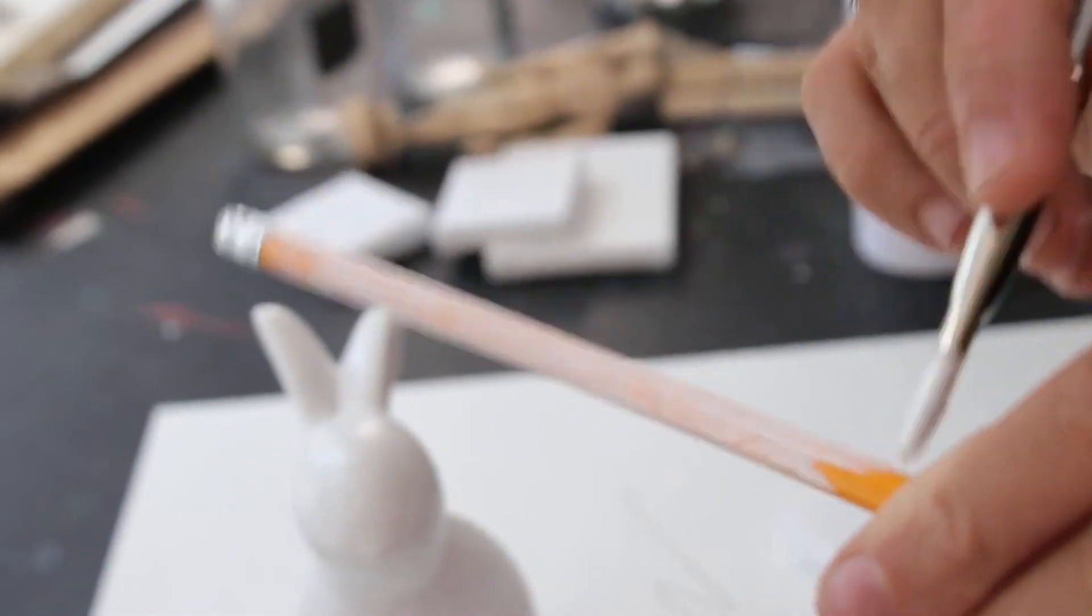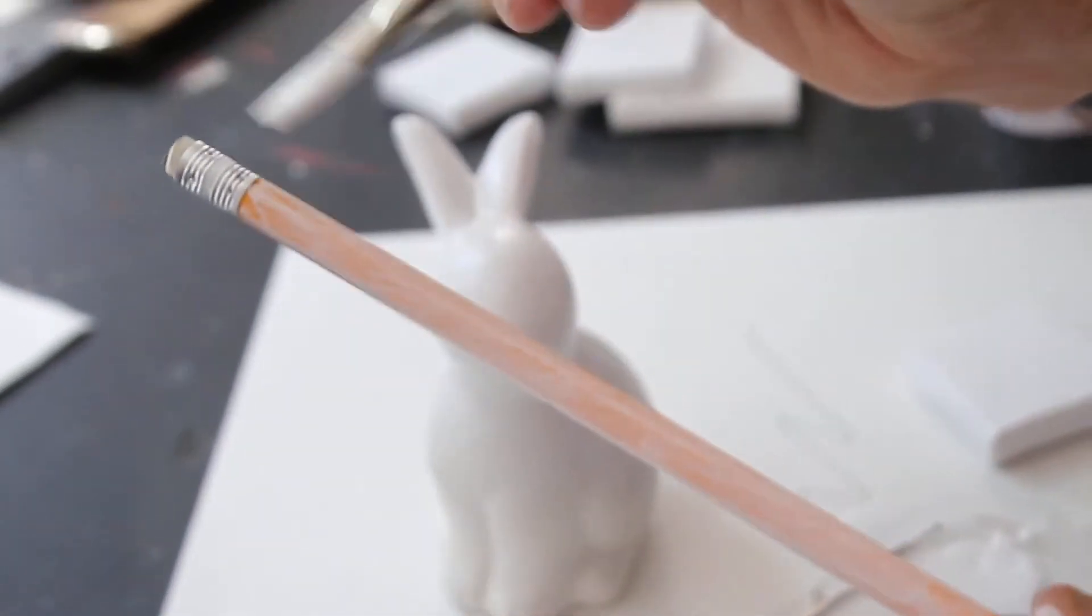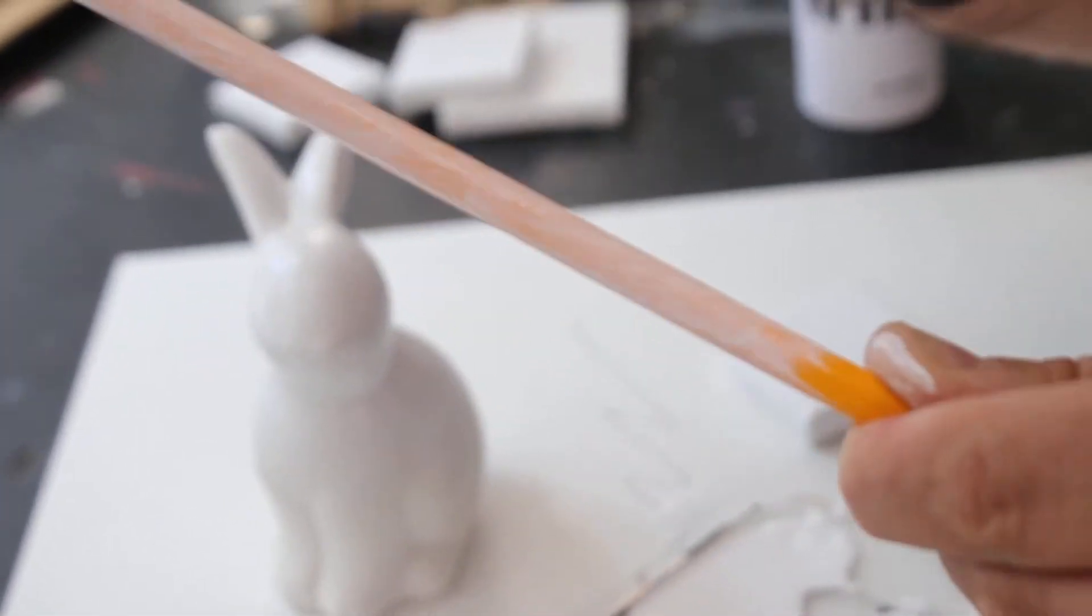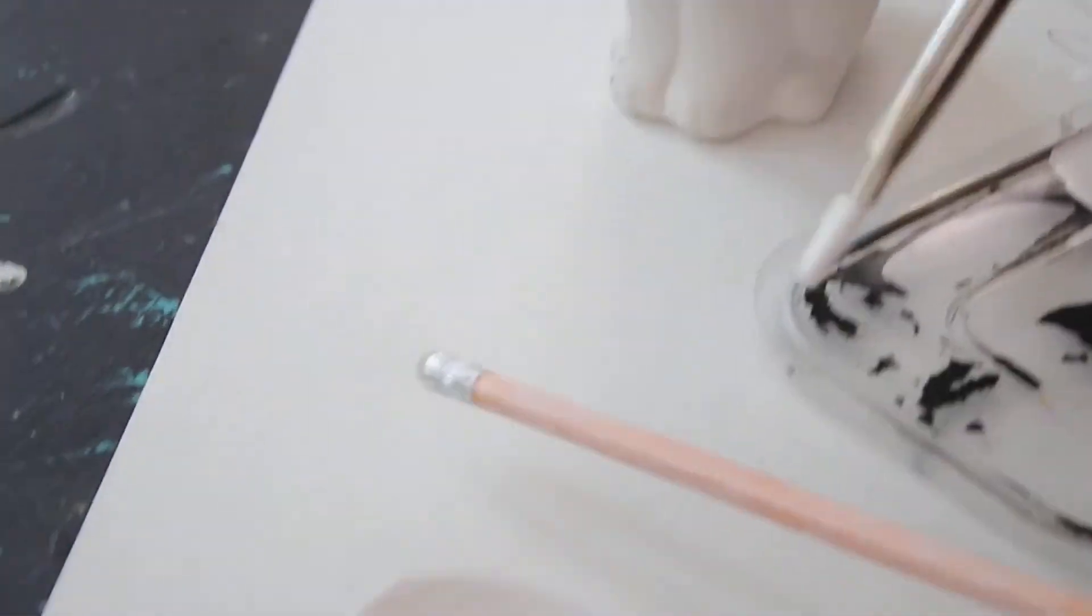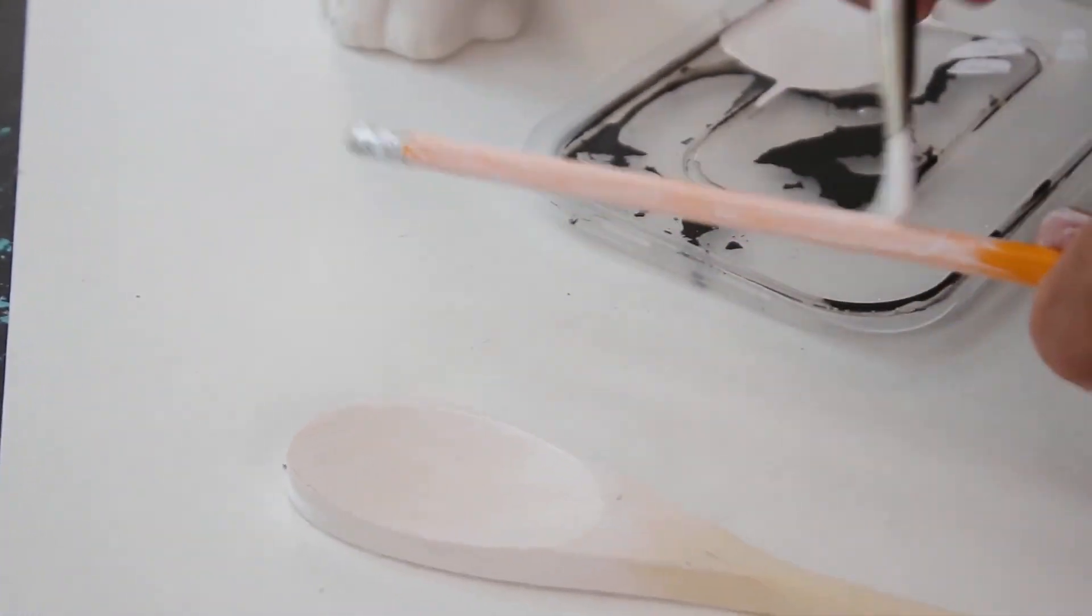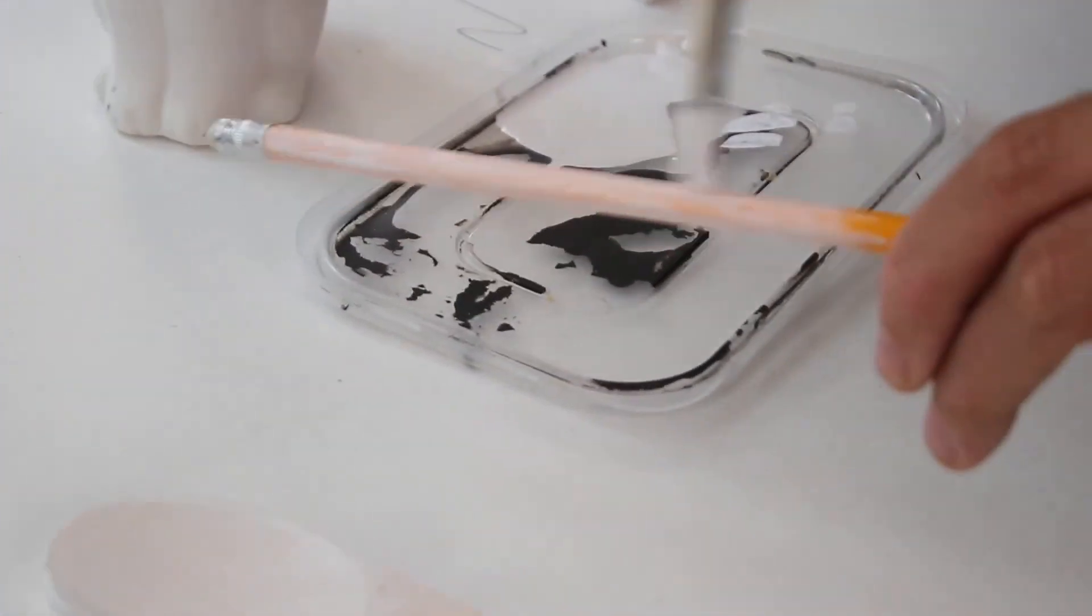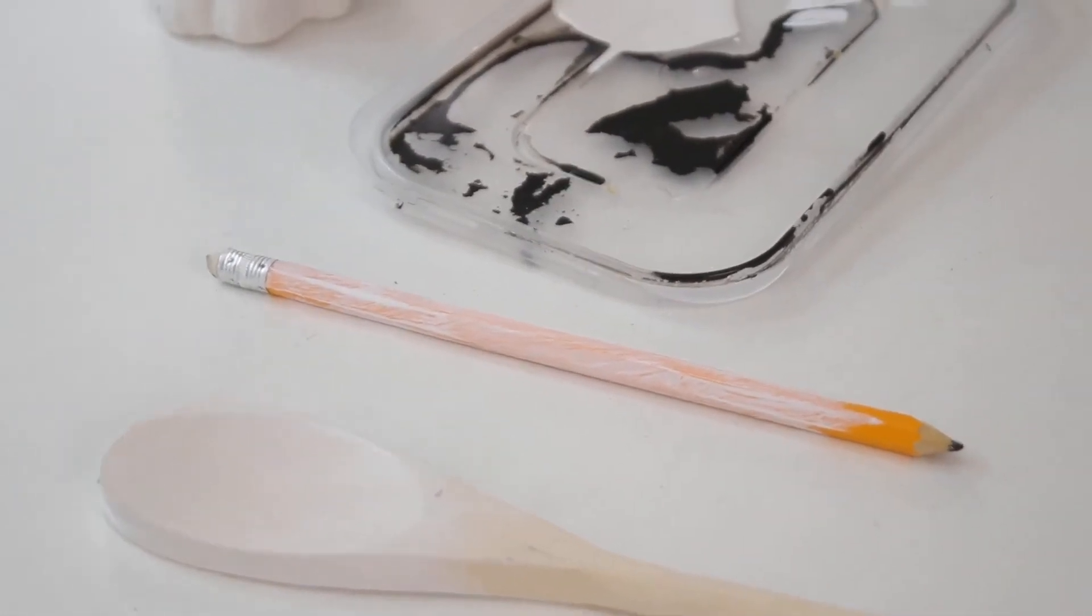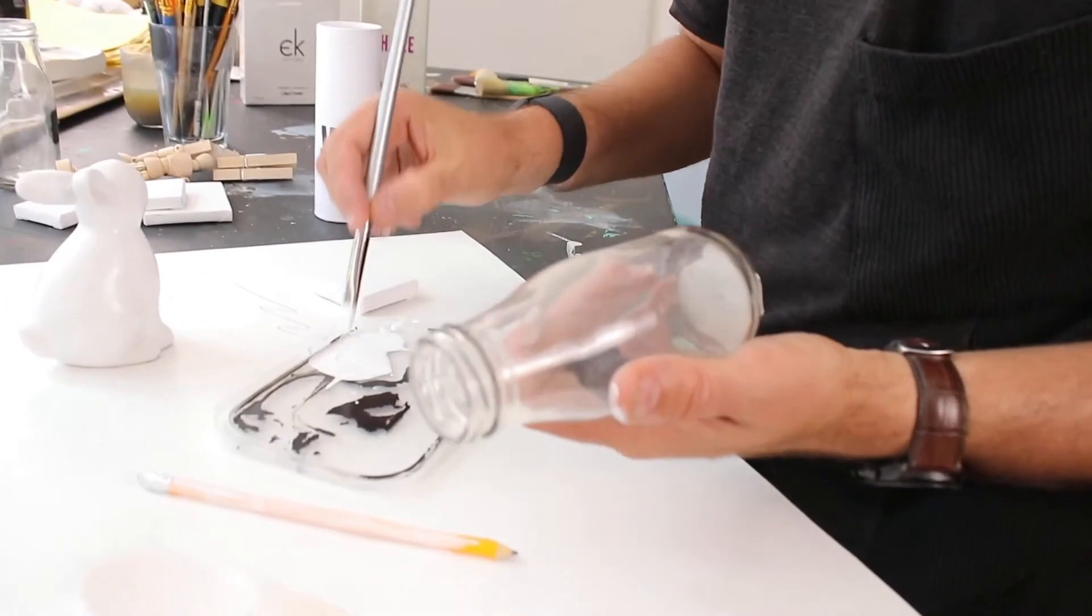That first coat is just going to key that surface for me and give subsequent coats something to hang on to. So it may look a bit rubbish and like nothing's really worked, but I promise you once that layer dries, that very thin layer, we're going to be able to go over that with some white and it will go on really strong.